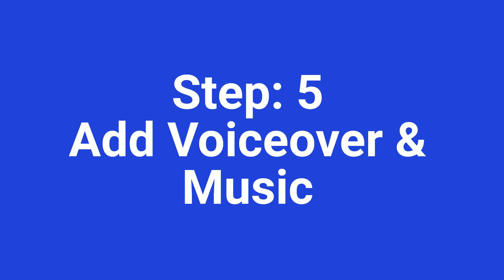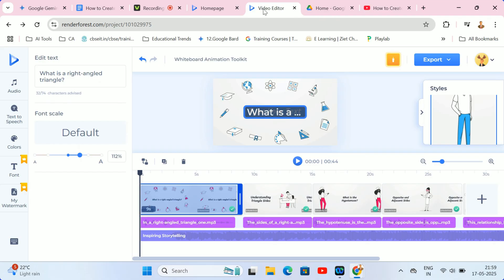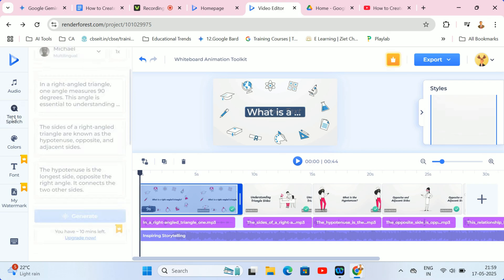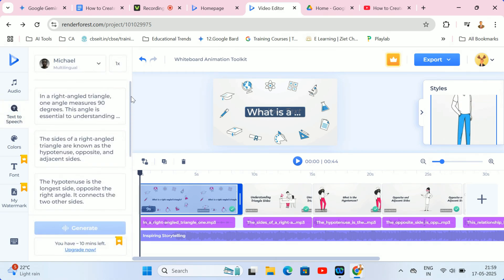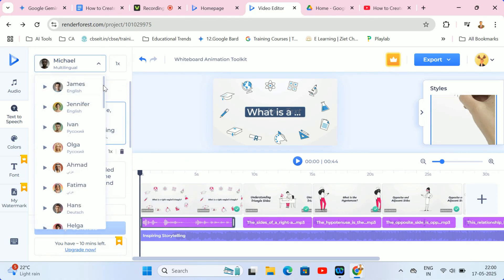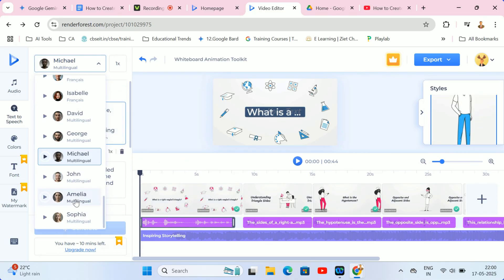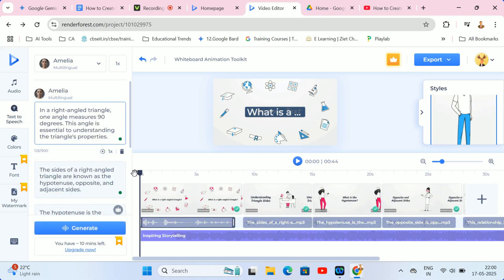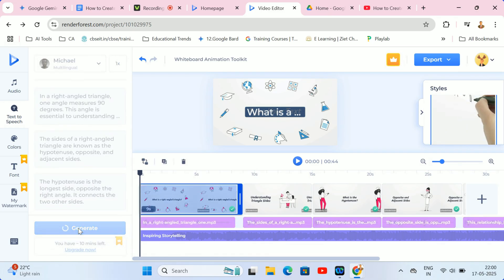Next step 5. Add voiceover and music. Now let's add the crucial audio element to your whiteboard animation. The first step is to navigate to the text-to-speech option. Here, you'll find a selection of voice actors to choose from. For instance, you can select Amelia, who speaks with a UK accent. Once you've chosen your preferred voice, the next step is to generate the voiceover from your written script.